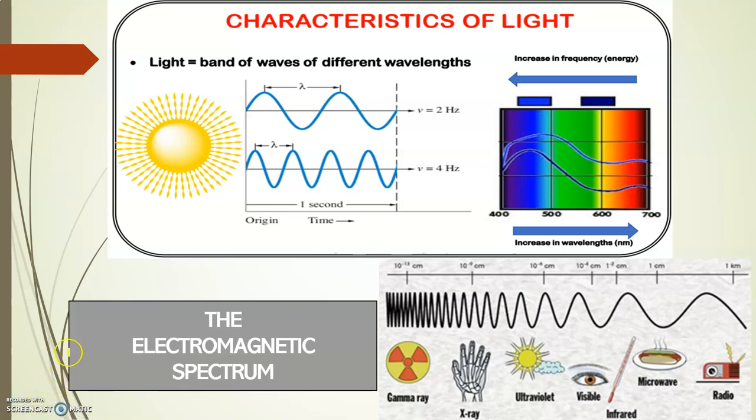Light is a band of waves of different wavelength having characteristic frequency and wave number. The electromagnetic spectrum shows the wavelength of different kinds of radiations that are known.